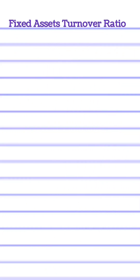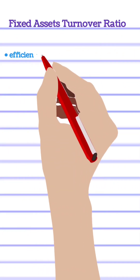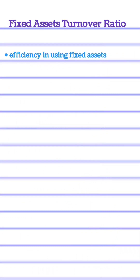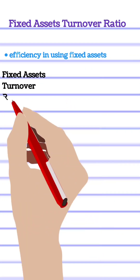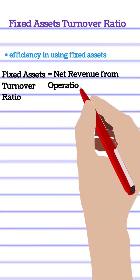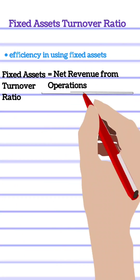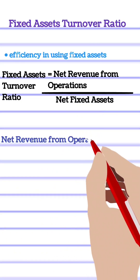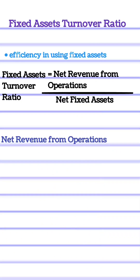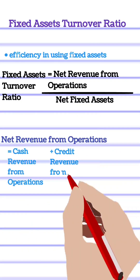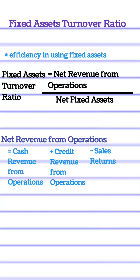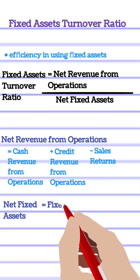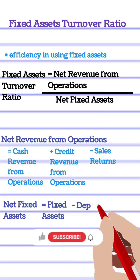Fixed assets turnover ratio measures the efficiency with which a business uses its fixed assets in generating sales. Its formula is net revenue from operations divided by net fixed assets. Net revenue from operations is equal to cash sales plus credit sales minus sales returns. Net fixed assets is equal to fixed assets minus depreciation.